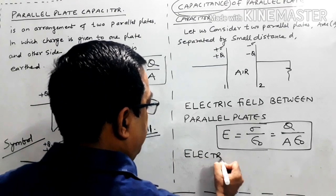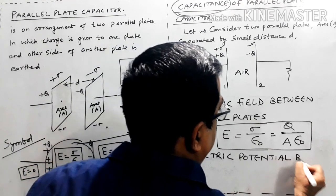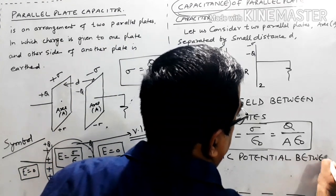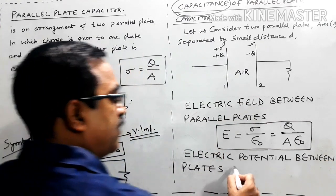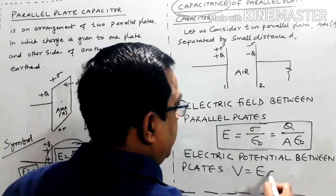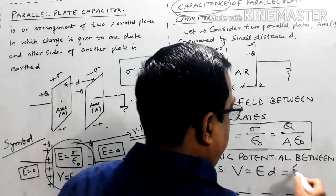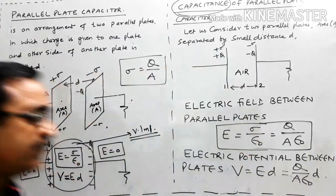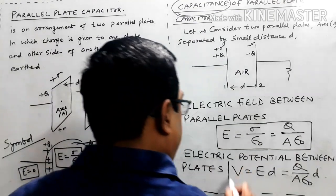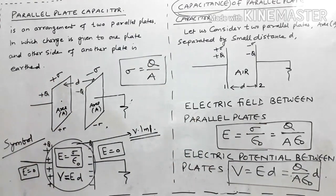Similarly, electric potential between the main plates: V = ED = (Q/Aε₀) × D. So the electric potential V = QD/(Aε₀).